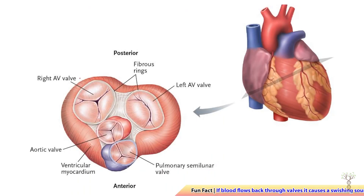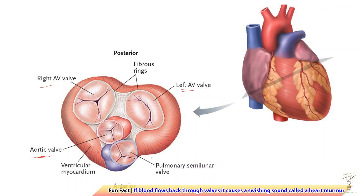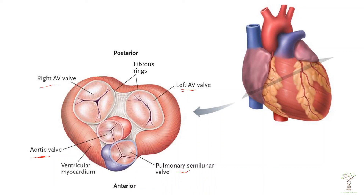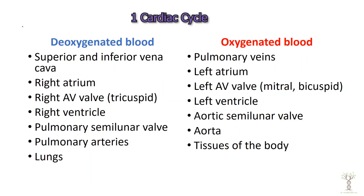Let's have a quick look at the valves. If we cut the heart in a transverse section and look down at the top of the heart, we can see the right and left AV valves along with the aortic and pulmonary semilunar valves. Here is a summary of the exact order of structures that blood flows through — from the body with deoxygenated blood, and then from the lungs with oxygenated blood — for one complete cardiac cycle.